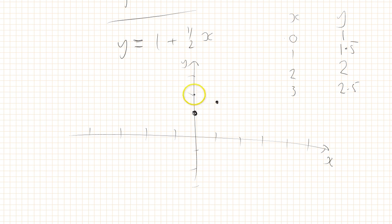2, 2, which is there. 3, 2 and a half is there. And so on. And now I can link them all up with a red line. There we go. And I can also come by here as well, just to draw that line in there. It's not super neat, but there you go.